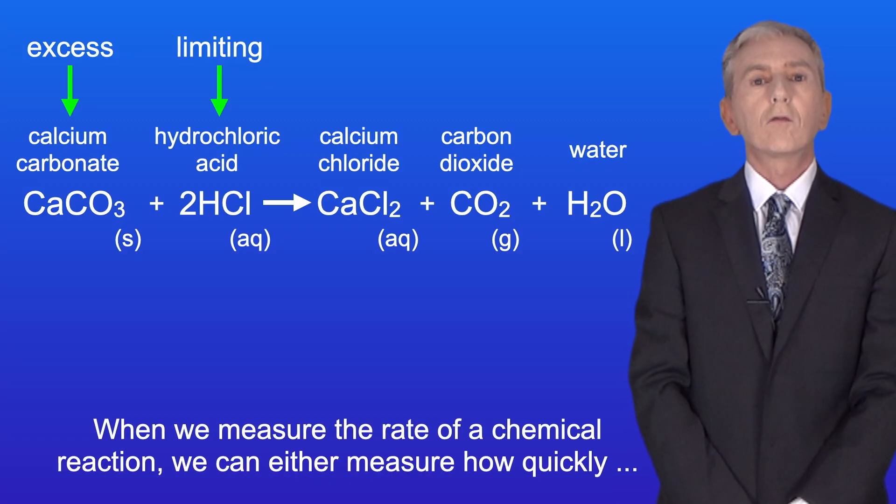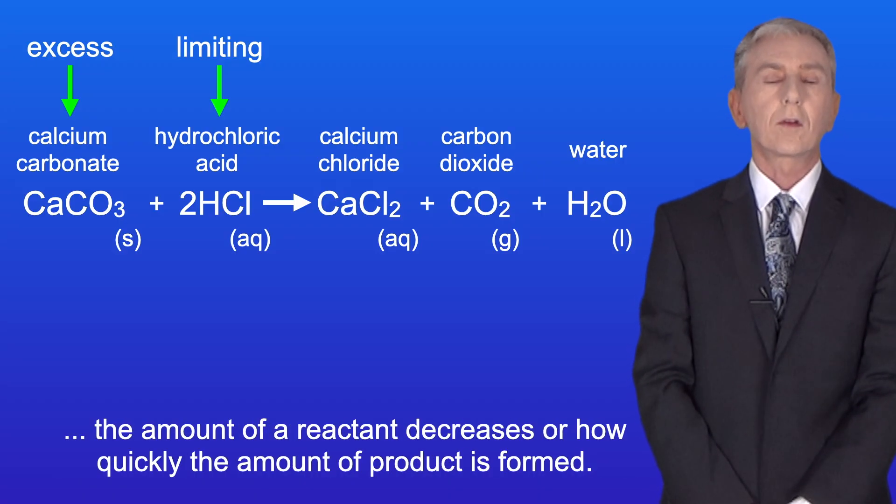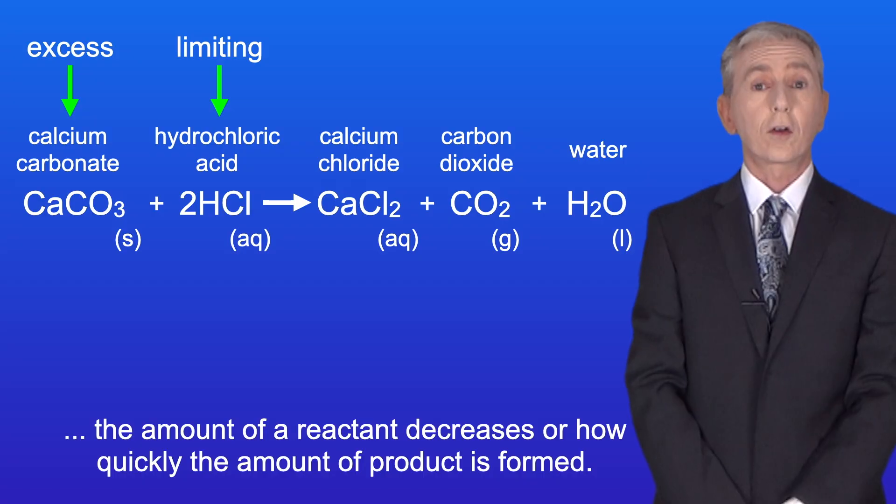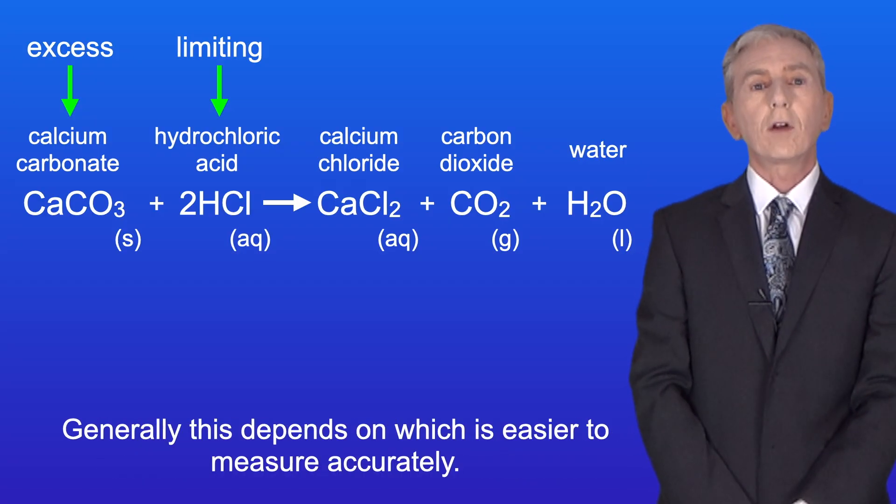Now when we measure the rate of a chemical reaction we can either measure how quickly the amount of a reactant decreases or how quickly the amount of product is formed and generally this depends on which is easier to measure accurately.